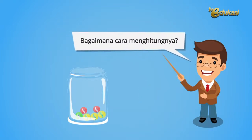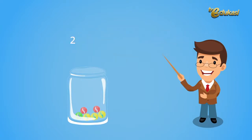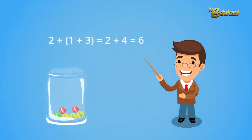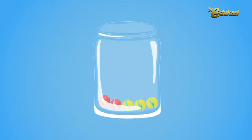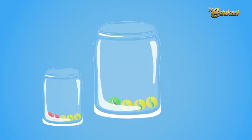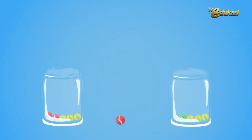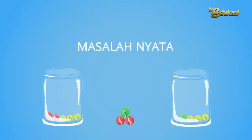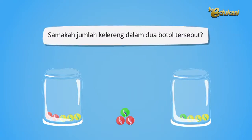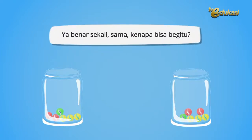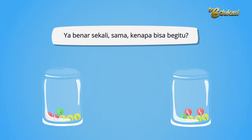Bagaimana cara menghitungnya? 2 ditambah kurung buka, 1 ditambah 3 kurung tutup sama dengan 2 ditambah 4 sama dengan 6. Masalah nyata: samakah jumlah kelereng dalam 2 botol tersebut? Ya benar sekali, sama. Kenapa bisa begitu?